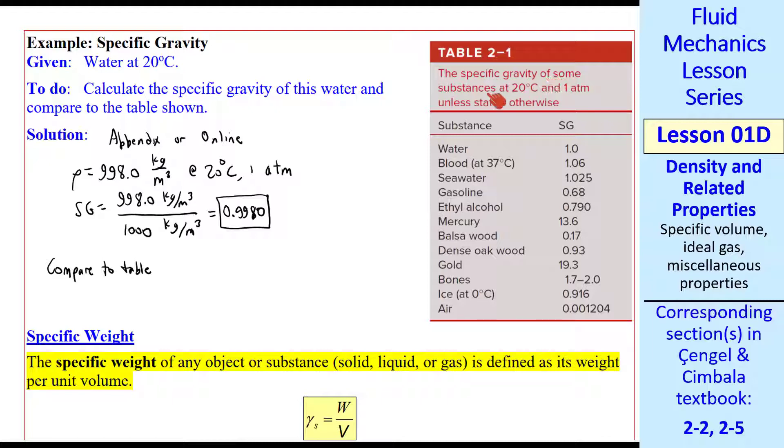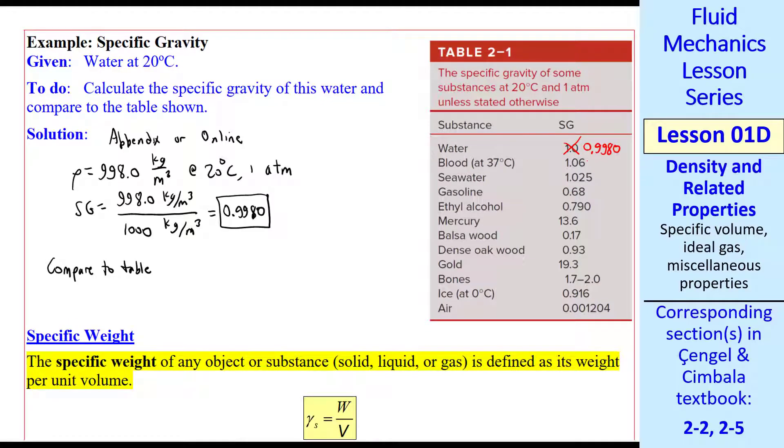this table says the specific gravity of some substances at 20 degrees C and 1 atmosphere, and it gives the specific gravity as 1.0. This would be the case if the water were at 4 degrees C, which is the standard reference. So this really should say 0.9980 to be consistent.